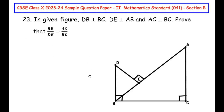Let us begin with the main question. In the given figure, DB is perpendicular to side BC, DE is perpendicular to side AB, and AC is perpendicular to side BC. We need to prove that BE over DE is equal to AC over BC.